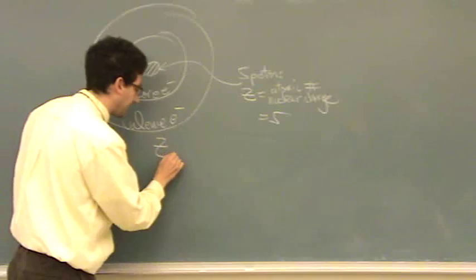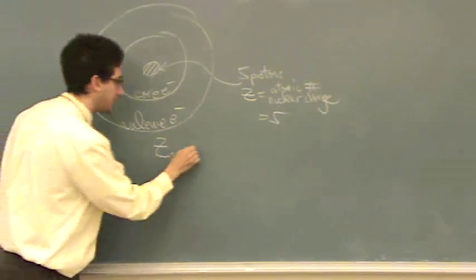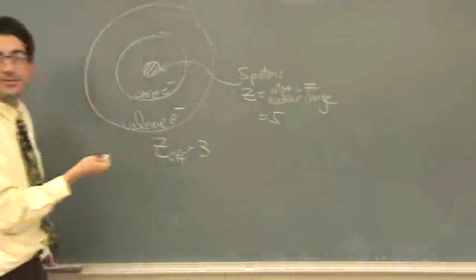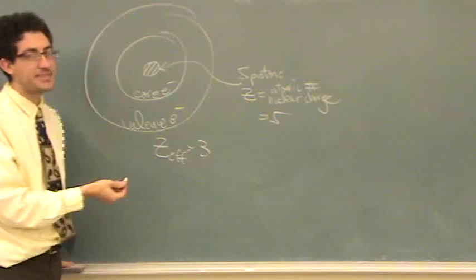So effectively, the valence electrons might only see three of the five. So we call that Z-effective, the effective nuclear charge, is three. Or whatever they see, let's say they can't see all five. So it's kind of like you're in the movies and a really tall person with a big hat sits in front of you. You can't see Tom Cruise in the movie, so effectively there's one less actor. That's the basic idea.